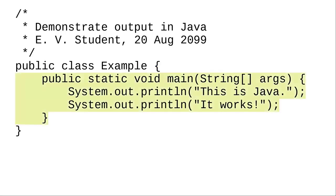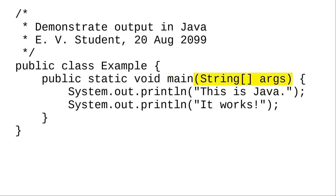Within the class, you define methods, which describe the things the class does. Methods are a lot like mathematical functions. The words public static void are, for now, a magic spell that you need to chant to make Java happy. Main is the name of the method. Whenever the operating system runs one of your Java programs, it looks for a method with that special name and starts by executing that method. Java is case sensitive — if you were to name that method MAIN with all capitals, the operating system wouldn't find it. The parentheses and string array args allow you to give information to a Java program when you run it from the command line.